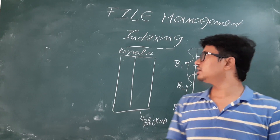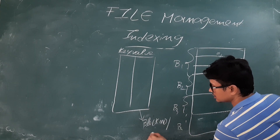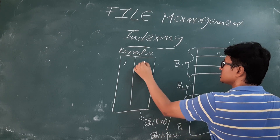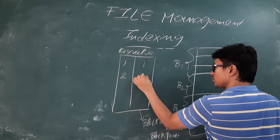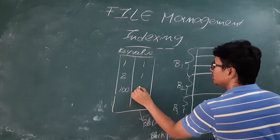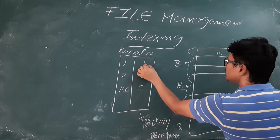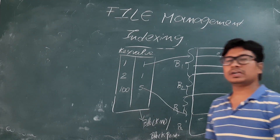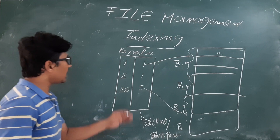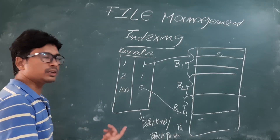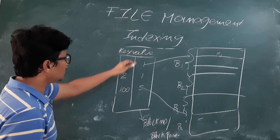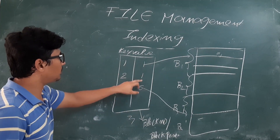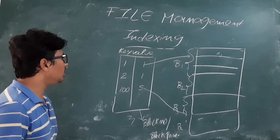The block number — also called the block pointer — tells me in which block the corresponding record is located. For example, record number one is in block one, record number two is also in block one, and record number 100 is in block five. The advantage of indexing is fewer block accesses. If I have n blocks in sorted order, I can apply binary search.